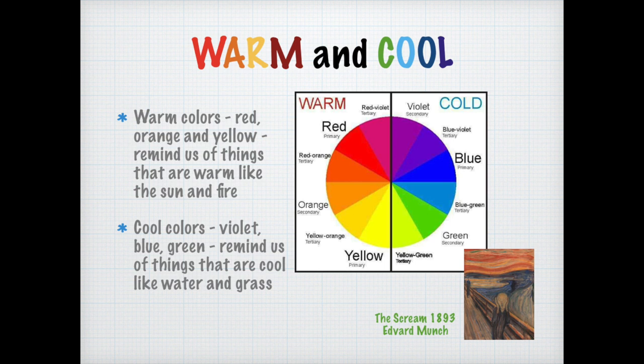The warm and the cool colors. We think of the warm colors as red, orange, and yellow, and they remind us of things that are warm, like the sun and fire. Cool colors are violet, blue, and green, and these colors remind us of things that are cool, like water and grass.